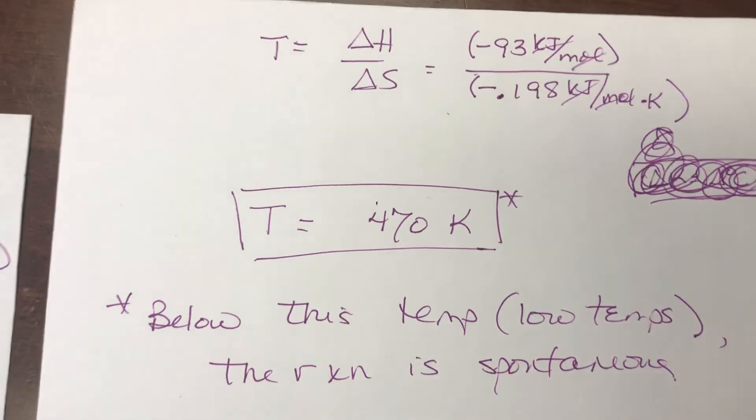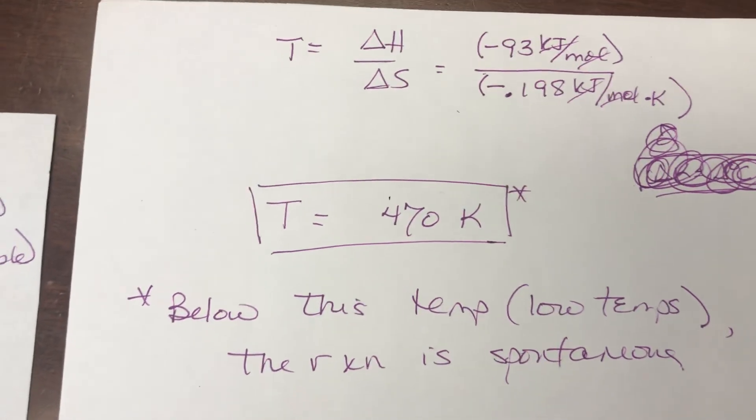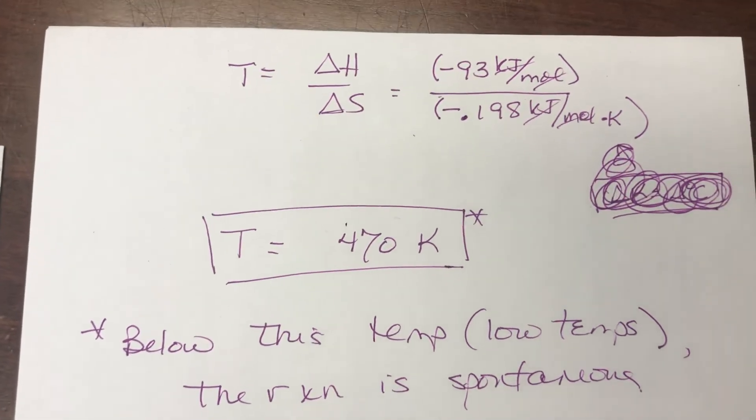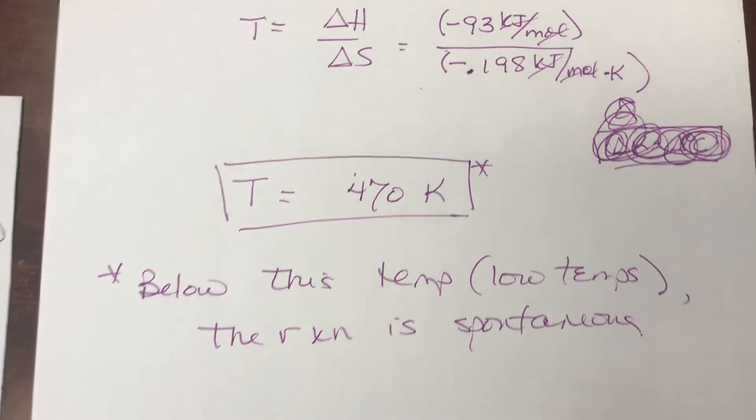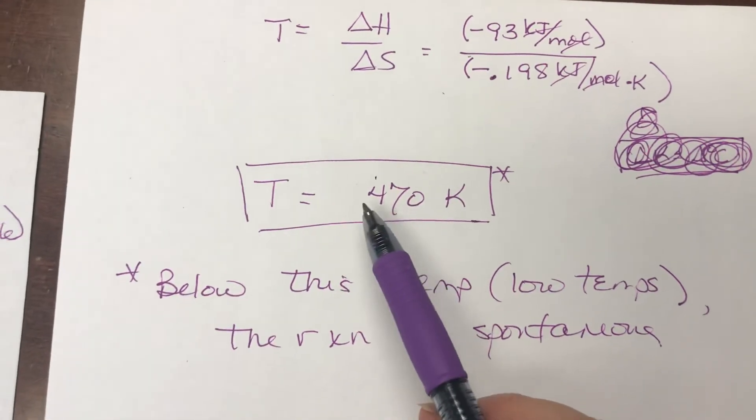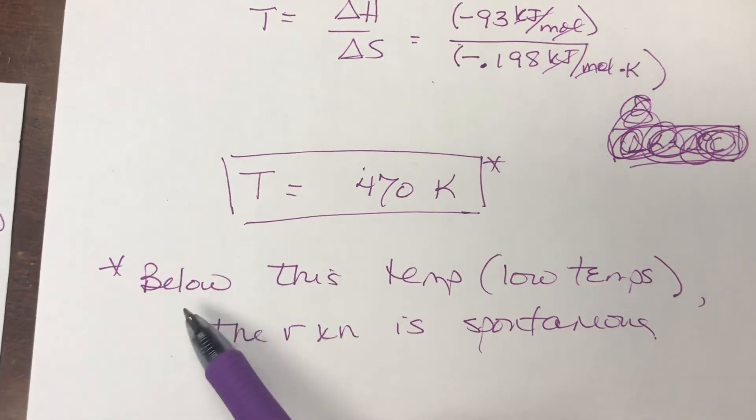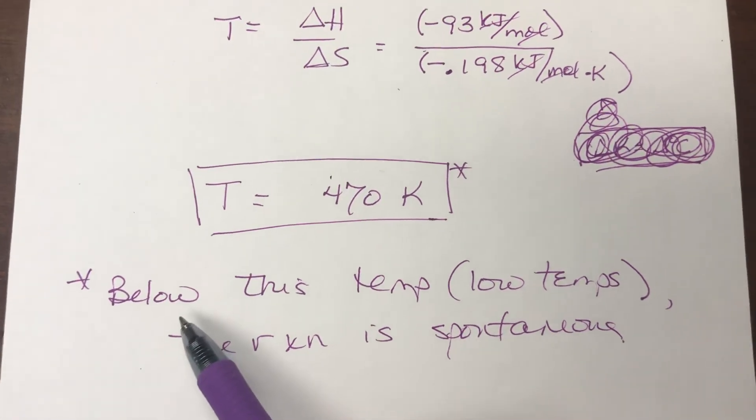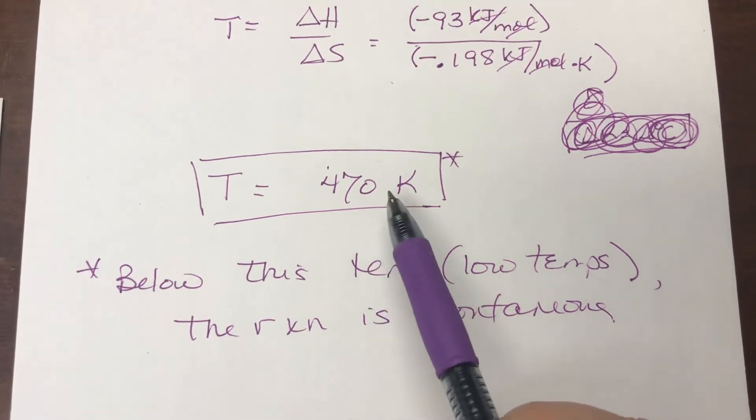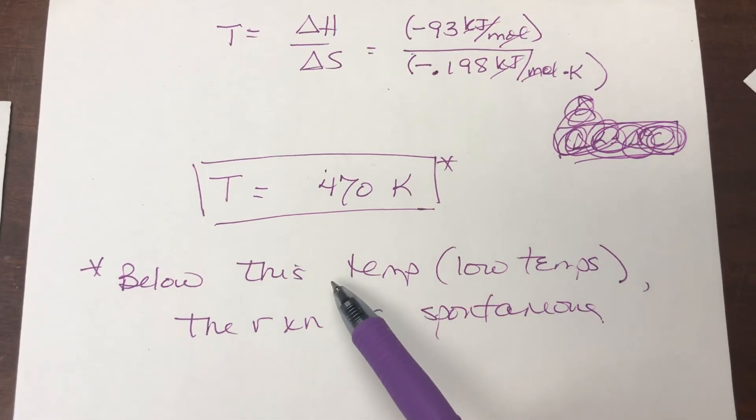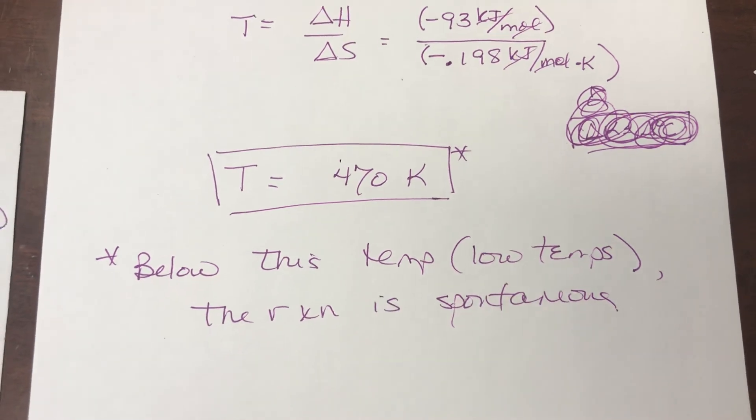That would be the temperature at which the reaction would switch from spontaneous to non-spontaneous. If you want to be a little bit more sophisticated, I mean just giving that temperature would give the turning point, but if you went on to say, you'd be even more impressive, below this temperature the reaction is spontaneous, above this temperature it's non-spontaneous. That's it.